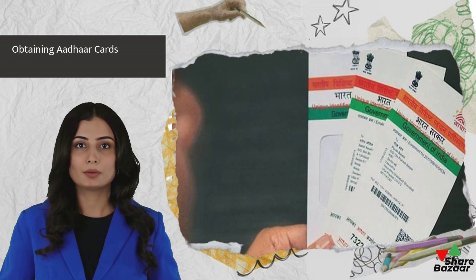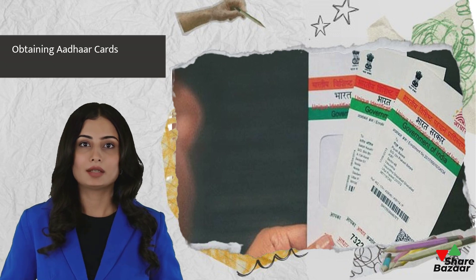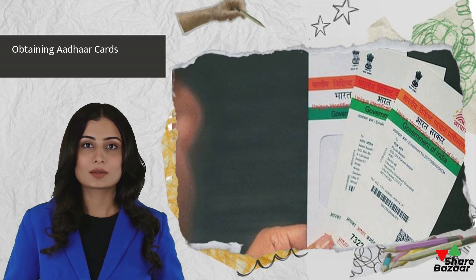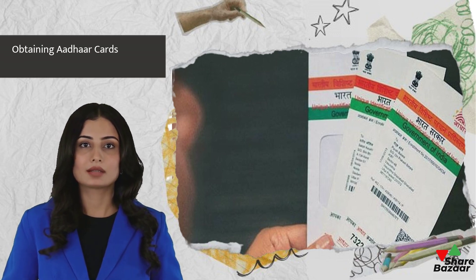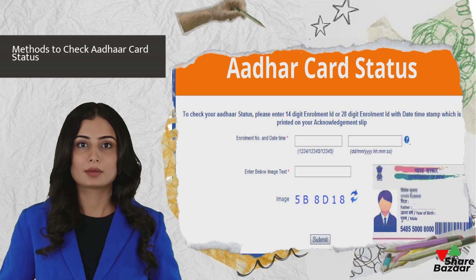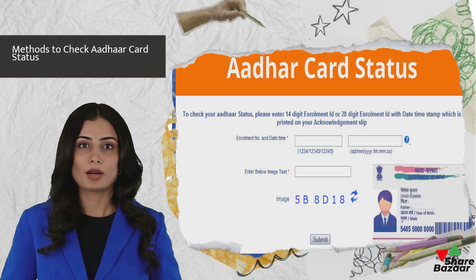Aadhaar cards are obtained from enrollment centers, and individuals can check their card status through the official UIDAI — Unique Identification Authority of India — website. The enrollment number, provided in the acknowledgement slip received upon application, is essential for this process. Checking Aadhaar card status can be done online via the UIDAI website or at an official Aadhaar center.